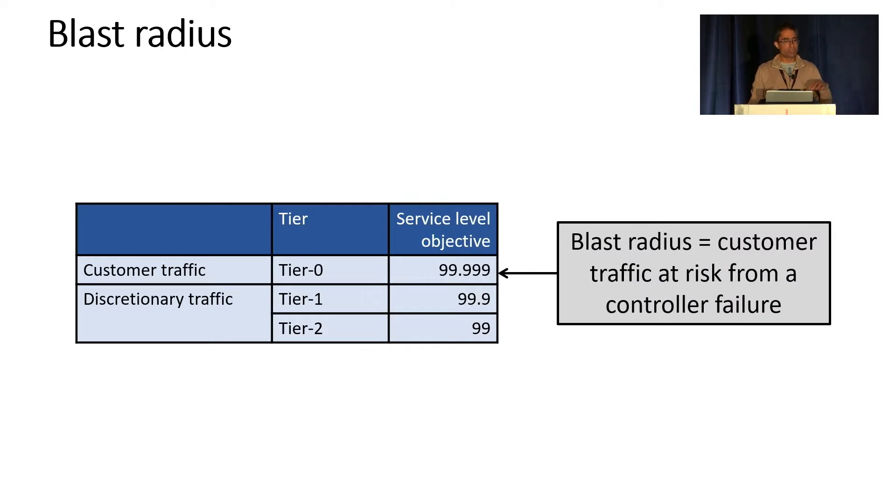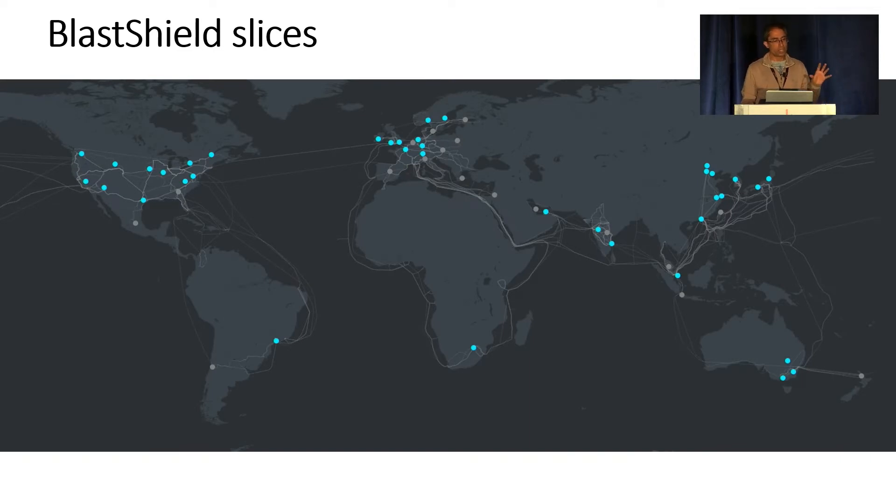So it's worth looking at the kind of traffic that we carry on our network. We carry both discretionary traffic and customer traffic. We call them tiers zero through two. And there's a service level objective that we have for this. Obviously, tier zero, which is our customer traffic, has the highest service level objective. What I mean by service level objective is the successful transmission rate of requested bytes, and that is quite high for customer traffic. We use this word blast radius. Here, I don't mean distance, but I really mean the customer traffic or percentage of customer traffic or volume of customer traffic at risk with a controller failure.